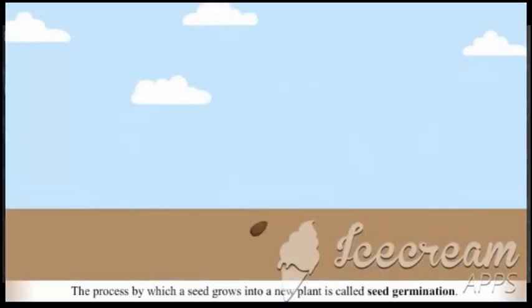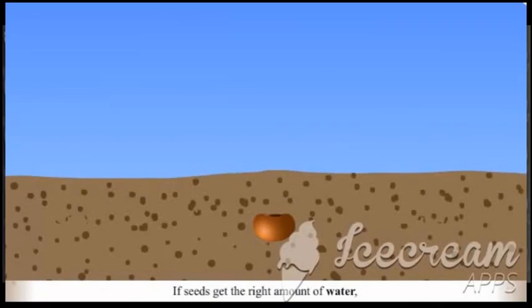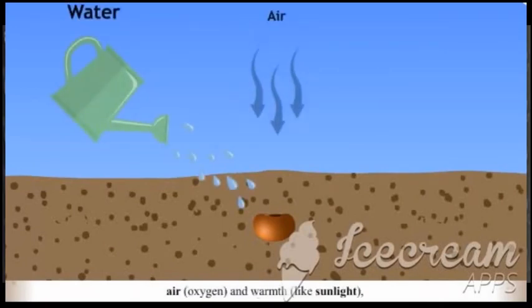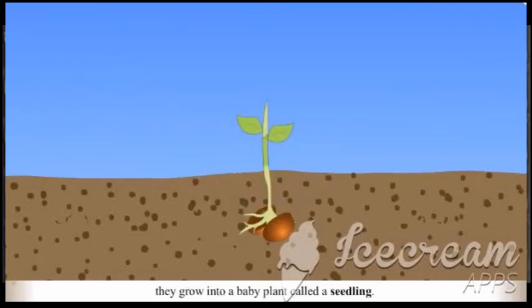The process by which a seed grows into a new plant is called seed germination. If seeds get the right amount of water, air, oxygen, and warmth like sunlight, they grow into a baby plant.